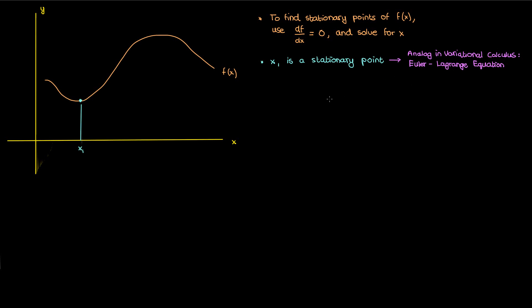Now the analog to this equation in calculus of variations is the Euler-Lagrange equation. In calculus of variations, if you want to find the stationary function of a functional — which is a function of functions — you solve the Euler-Lagrange equation.